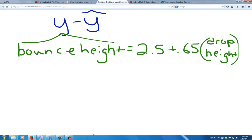Let's suppose we have a linear model for the bounce height of a ball in feet. We'll say that the predicted value for the bounce height of this ball is equal to 2.5 feet plus .65 times the drop height, also in feet.